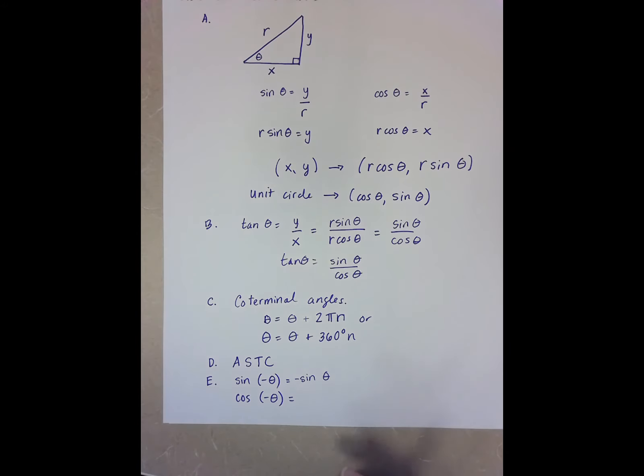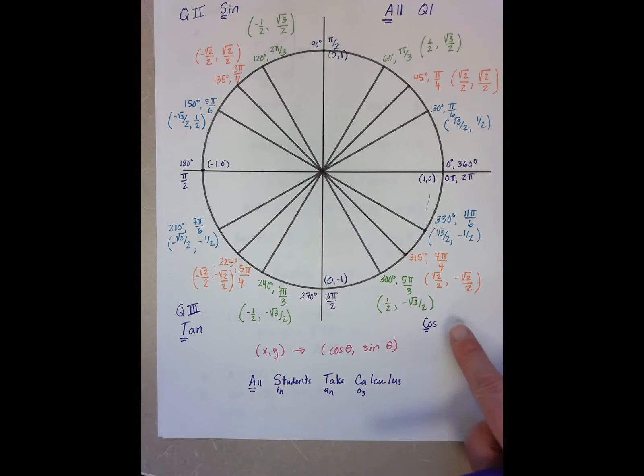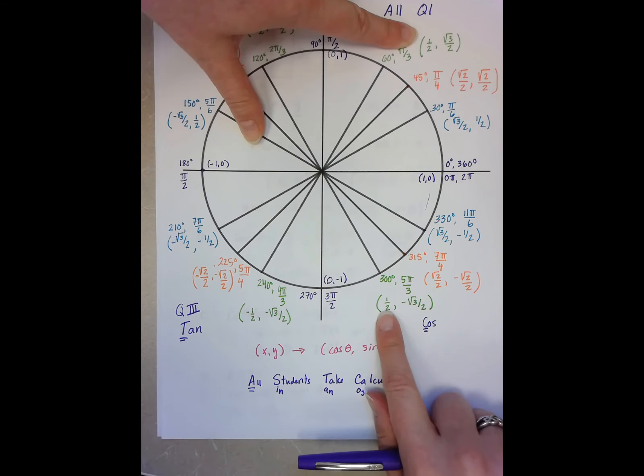For cosine, it's slightly different though, because when cosine is positive, cosine is positive in this quadrant and this quadrant.